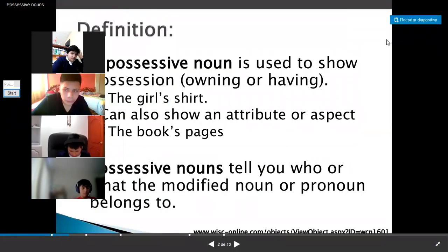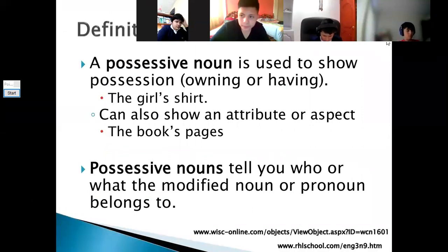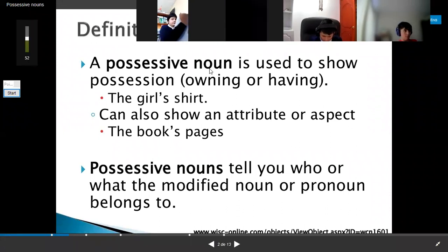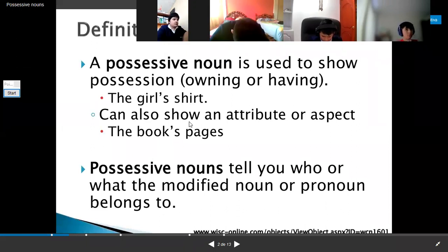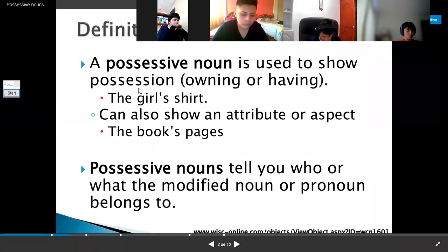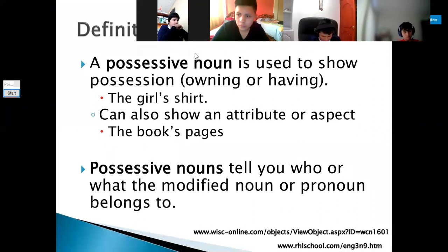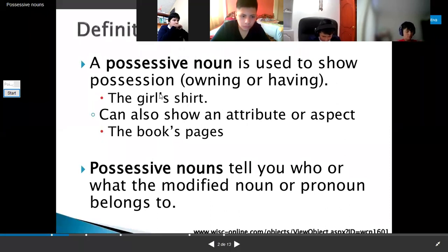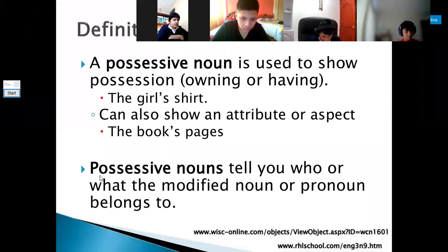Possessive noun. Possessive noun. Recuerden que los posesivos, vamos a hablar de sustantivos, posesivos, sustantivos. ¿Qué es un sustantivo? Lo que es el nombre de animal, persona o cosa. Ese es un sustantivo. Then, let's continue. Definition. Vamos a saber qué es un sustantivo posesivo. Mr. Mejía, read, please. Possessive noun is used to show possession, owning or having. Por ejemplo. The girl's shirt can also show an attribute or aspect. The book's page. Okay, Pablo, what is the meaning of the girl's shirt? La camiseta de la chica. The book's pages. Las páginas del libro. Excellent. Very good. A possessive noun is used to show possessions. ¿Qué nos indica esto? Es para indicar posesión. ¿A quién pertenece? Pertenencia o de tener. Solo pongo el apostrofe y la S y pongo qué es lo que posee esa persona. Mr. Miss Girón. Continue, please. Mr. Mejía. Possessive nouns tell you who or what the modified noun or pronoun belong to. Excellent. Very good. Los sustantivos posesivos nos dicen de quién o qué es lo que va a modificar el sustantivo o pronombre. La pertenencia. ¿A quién pertenece?